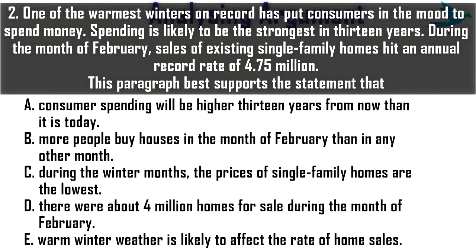Option A: 'Consumer spending will be higher 13 years from now than it is today.' This does not work because the passage talks about the present, but this statement talks about the future — 13 years from now. Option B: 'More people buy homes in the month of February than in any other month.' The paragraph is talking about a special, record-breaking event, but Option B implies something that happens every year, so it does not support the passage. Option C: 'During the winter months, the prices of single-family homes are the lowest.' This passes a judgment not mentioned anywhere in the paragraph, so we ignore it.